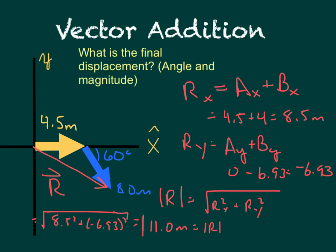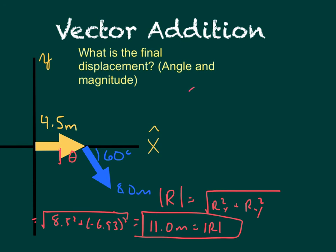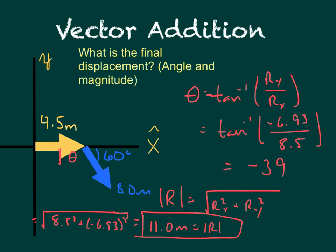And these absolute value signs just mean the magnitude of r. So that's the magnitude. We're still missing one part. What is it? It's the direction. So we need the direction. If I tell you 11 meters, who knows where you're going to end up. So to find this angle theta, what we're going to do is we'll say theta equals inverse tangent ry over rx, which equals inverse tangent of negative 6.93 over 8.5, which is negative 39.2 degrees. So that's theta. So you need both of these parts. Magnitude, about 11 meters, and direction, negative 39.2.